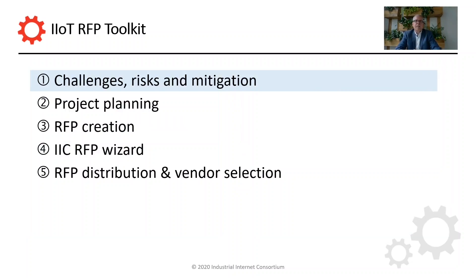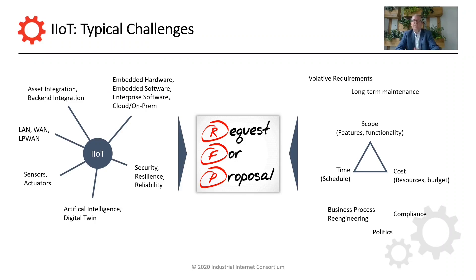So let's start by looking at challenges, risks and mitigation. A typical IoT project is different from the projects that you might be used to. Let's take for example a traditional enterprise software project where you need either an off-the-shelf or a custom software solution running on cloud or on-prem. In an IoT project you can add to that embedded hardware, embedded software, sensors, actuators and so on.